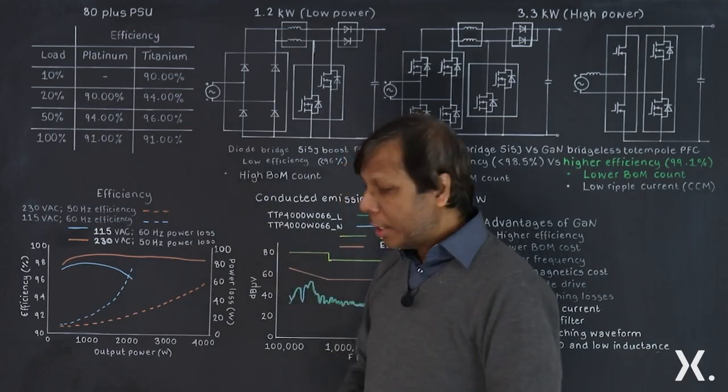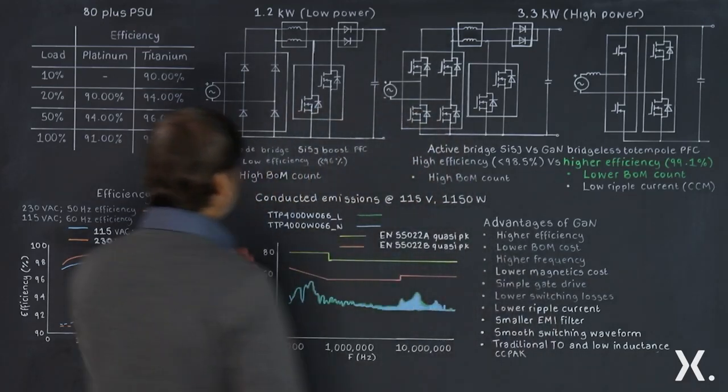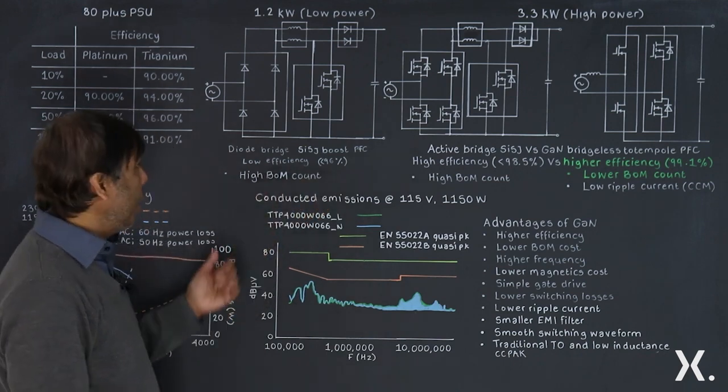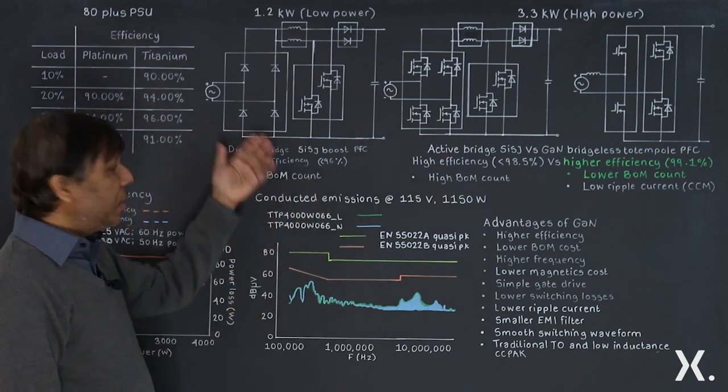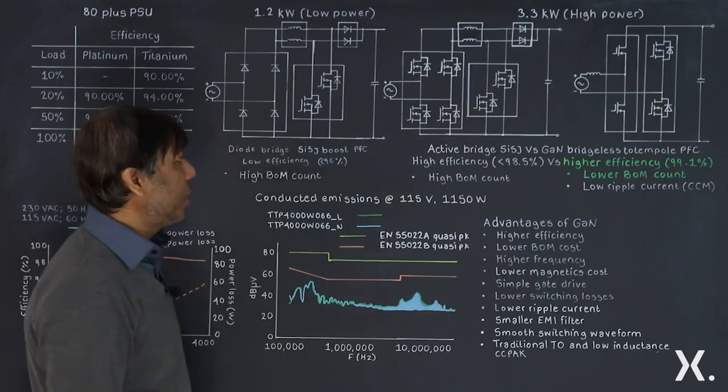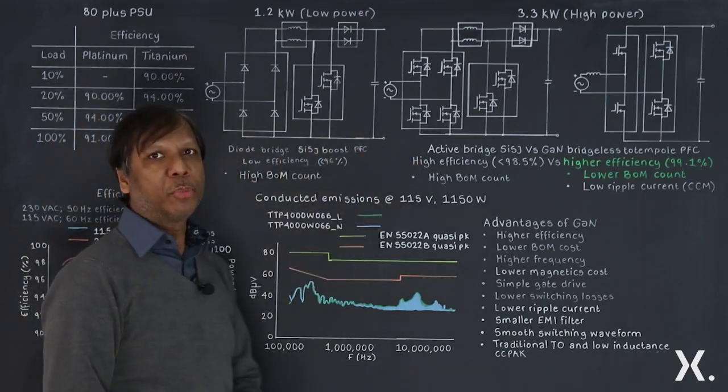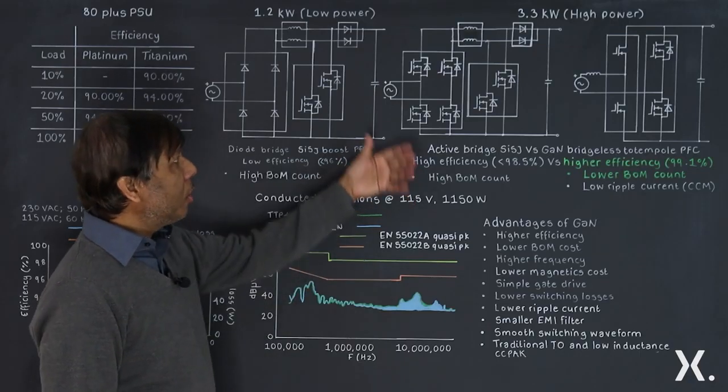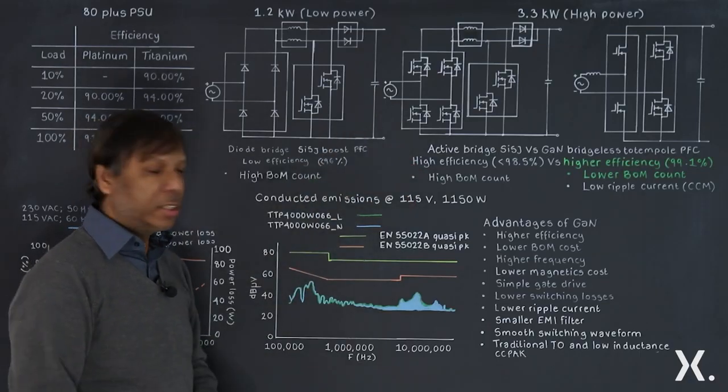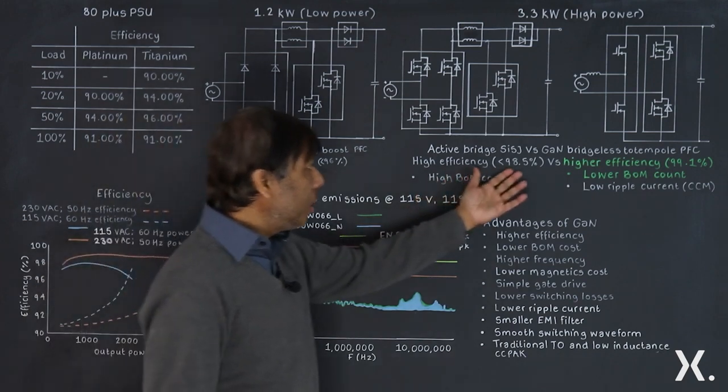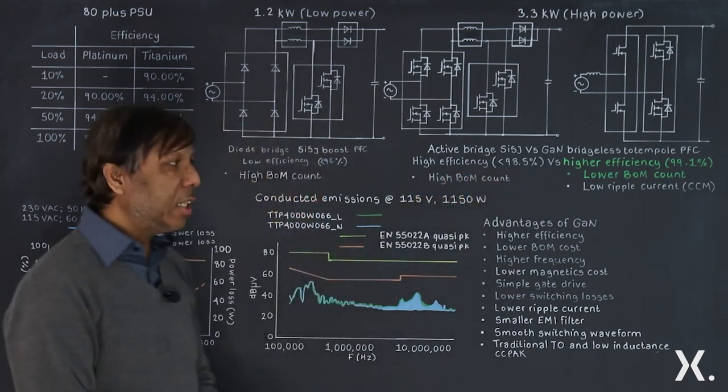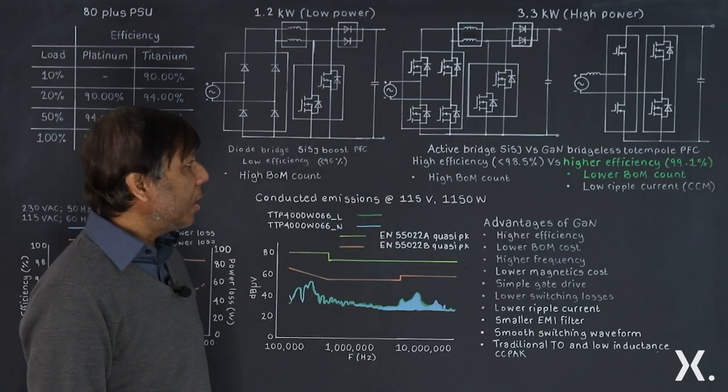Historically, people use the diode bridge boost rectifier, but the problem with this one is that it doesn't achieve quite that efficiency. To improve that efficiency, people started using the active bridge, but the BOM cost for this active bridge goes high quite significantly, even though it achieves around 98.5 percent.